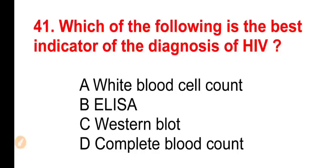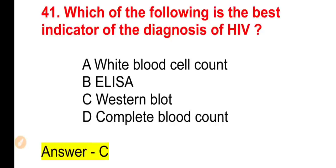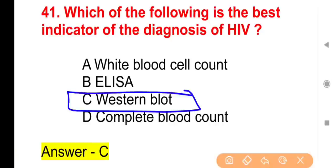Question 41: Which is the best indicator for the diagnosis of HIV? Options: White blood cell count, ELISA, Western blot, Complete blood count. The right answer is Option C — Western blot. It is the confirmatory test for HIV.